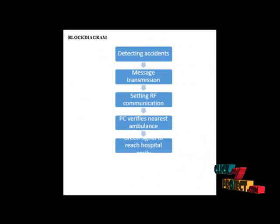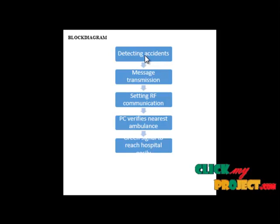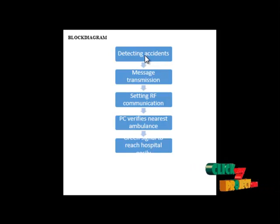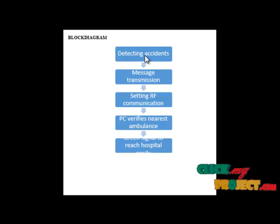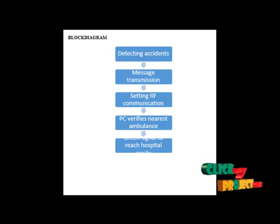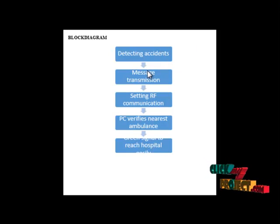This is the flow diagram of our process. First, our main objective is to detect the accident spot. For that, first we transmit the message, which is known as the message transmission part.